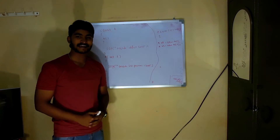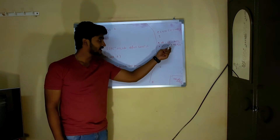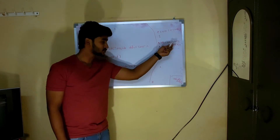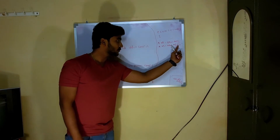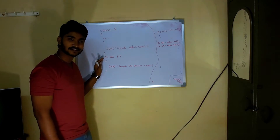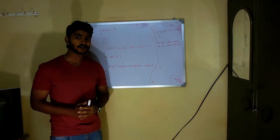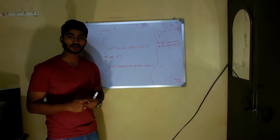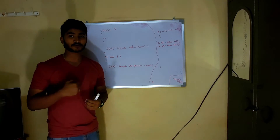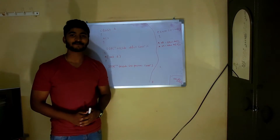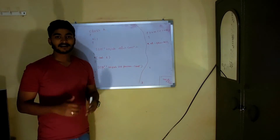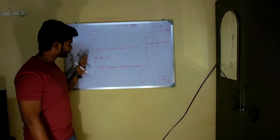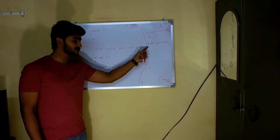So we understand that whichever constructor we use when creating an object, that matching constructor gets called. Here using the default constructor calls the default constructor, and using the int param constructor calls the int param constructor. But what if we want to call multiple constructors while creating a single object? For that, we need to use the 'this' keyword.